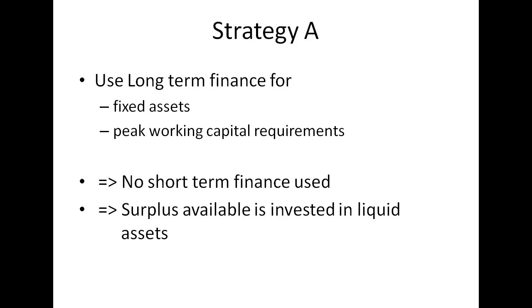We have three strategies. Strategy A: here we use long-term finance not only for fixed assets but also for the peak working capital requirements. You estimate your total working capital during the year and find the maximum level required, then use long-term finance for that maximum level. Therefore you can meet requirements throughout the year from long-term finance, and no short-term finance is used. Instead, you will have surplus available at times, which you will invest in liquid assets. This is the conservative strategy.